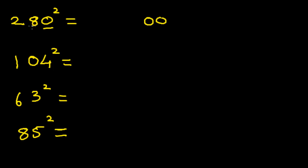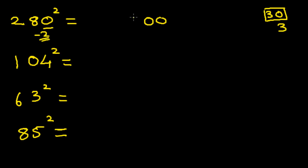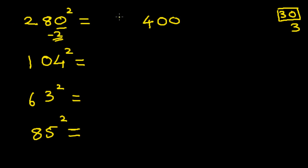Next, take the number 28. This number is closer to the base 30, with a multiplying factor of 3. So 28 minus 30 gives you minus 2. You square this number — you get 4. Then 28 minus 2 is 26, and 26 multiplied by 3 is 78. The answer is 784.